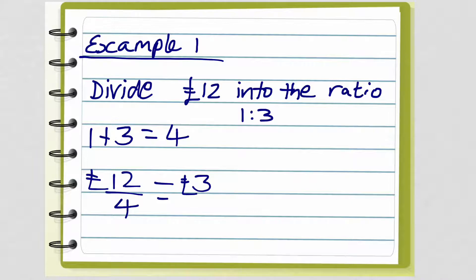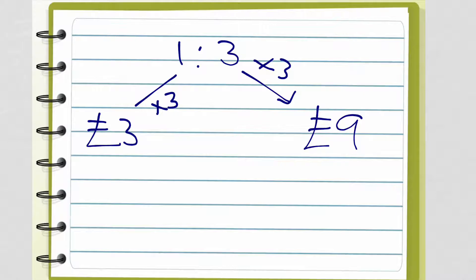So once we find out that, we can work out that in the ratio 1 to 3, if one part is worth £3, then 3 parts is going to be worth £9. And check that the amount of money adds up to the amount that we started with. 3 plus 9 equals £12.